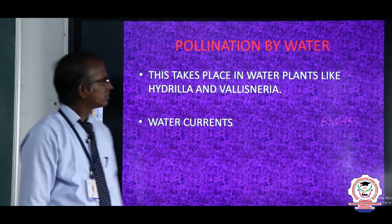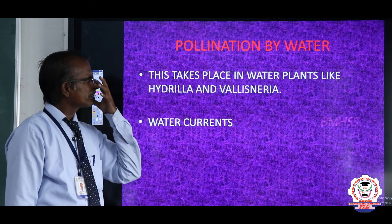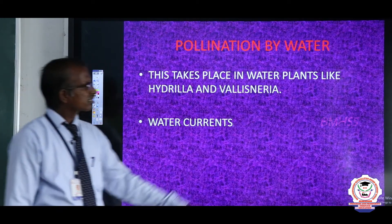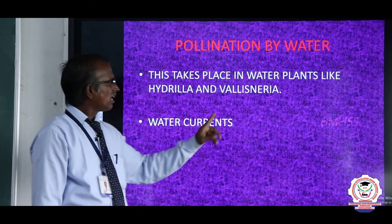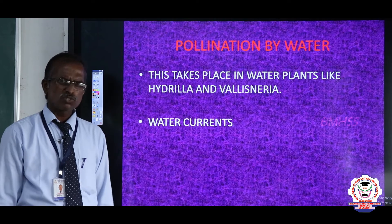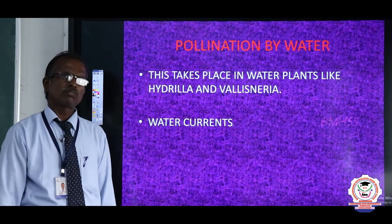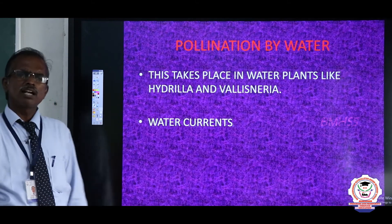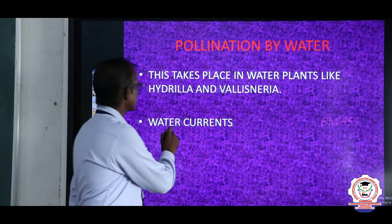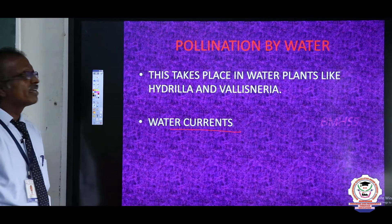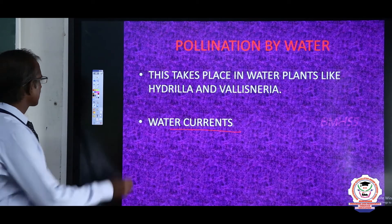Pollination by water takes place in water plants, hydrophyte plants, aquatic plants like hydrilla and vallisneria. In this case, water currents bring pollen grain from anther of male flower to stigma of another flower. Here, water current is the agent. Such pollination is known as hydrophily.